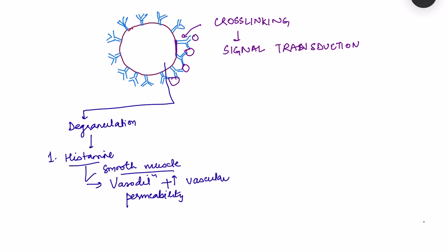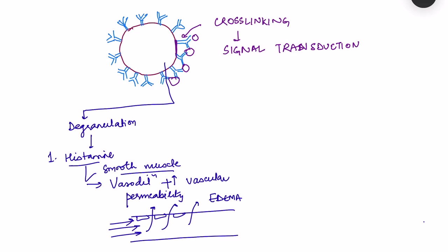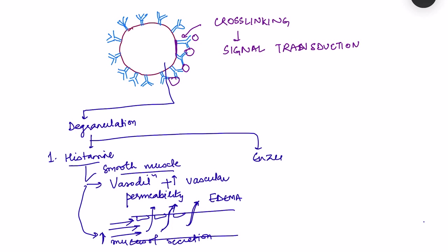Vasodilation and increased vascular permeability result in increased fluid loss from the vessels, causing edema, and vasodilation promotes continuous blood flow enhancing further fluid loss. Histamine also causes increased mucosal secretions — as seen in allergic rhinitis where increased secretions occur in the nose, bronchus, and gastric glands, depending on the site of exposure.